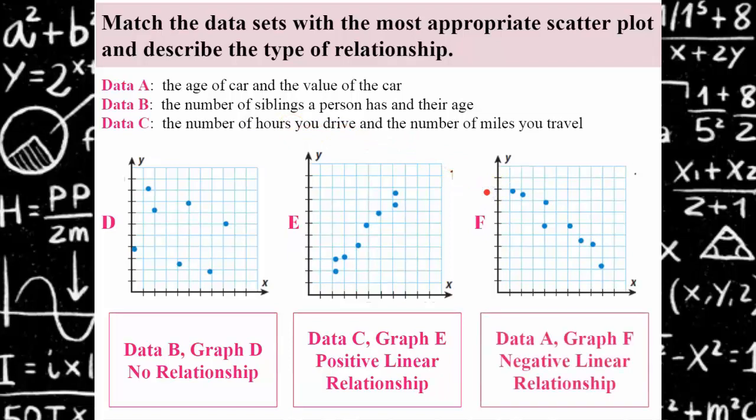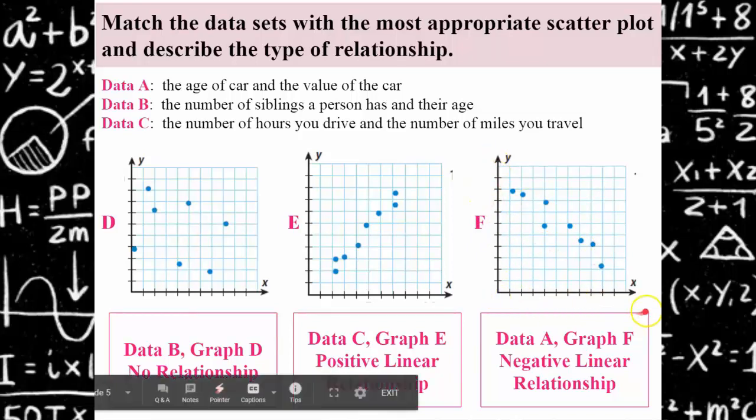Graph F would be data A, the age of your car. As your car is increasing in age, the value of your car is decreasing. So y would be the value of your car, x would be the age of your car, and there would be a negative linear relationship.